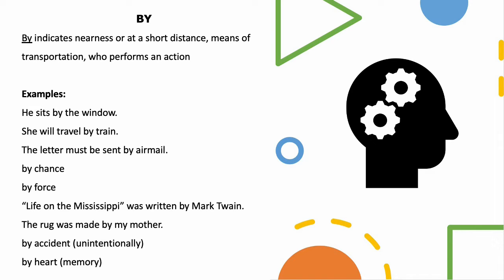For example, he sits by the window. Here we are showing the nearness of the person to the window. He sits by the window.